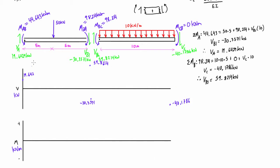Let's use our knowledge of shear force diagrams to fill out the rest. When we have a span with no distributed loads, the shear force remains constant until we hit a point load. The same thing happens on the other end — it's constant, and then right at that point load we get a jump. The magnitude of the jump equals the magnitude of the point force, and 19.642 minus 50 gives us negative 30.3571, which lines up with the points we've already plotted.